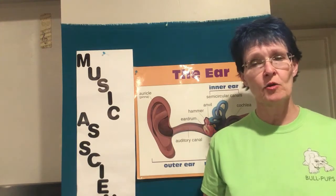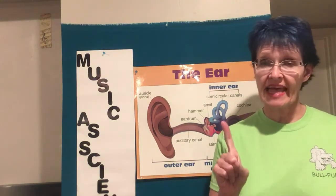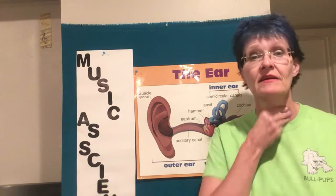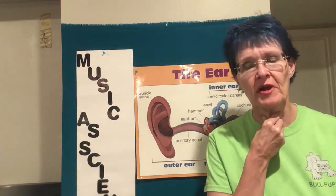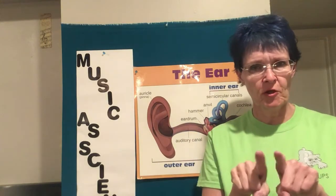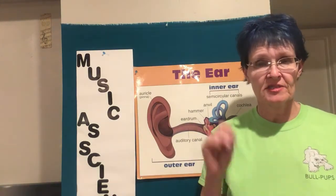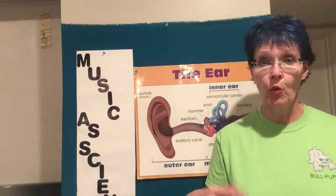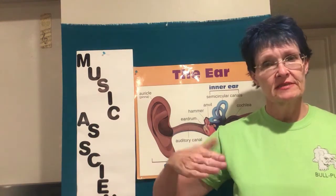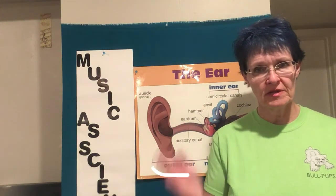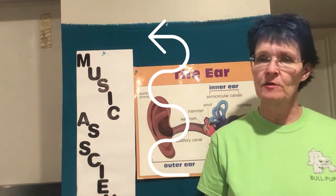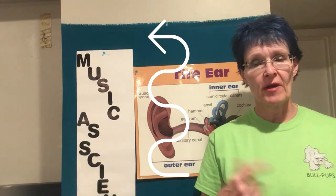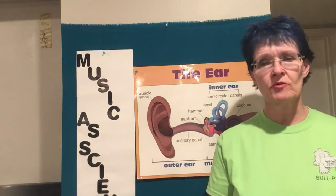So, we know that sound is a mechanical wave. Sound is produced by objects that are vibrating. When we sing, our vocal folds — some people call them vocal chords — they're actually little folds of tissue, and they vibrate together. When my voice wiggles back and forth, that is called a vibrato. You hear the part of the word vibrate? Sound is all about vibration.